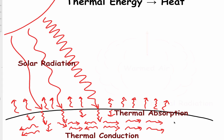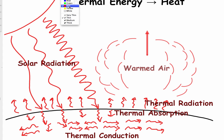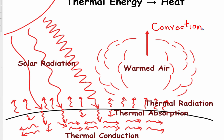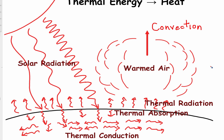Finally, we also have energy being released from the surface of the planet, which is what we call thermal radiation. And then we have convection — thermal radiation warming the air above the ground, and that warm air rises while cool air sinks from the atmosphere and comes in underneath the rising warm air to push it up.